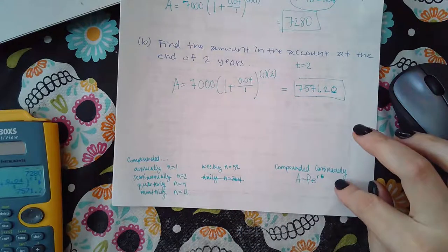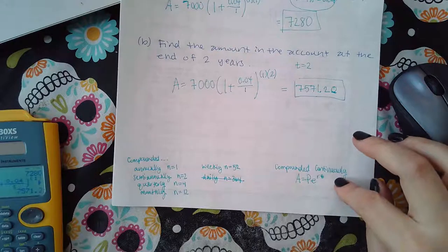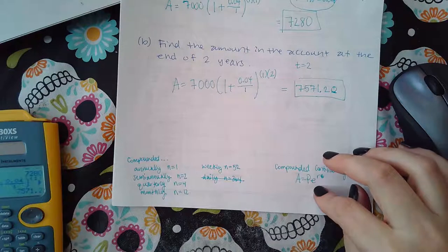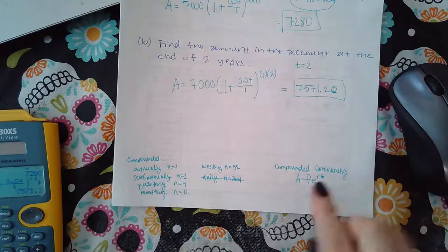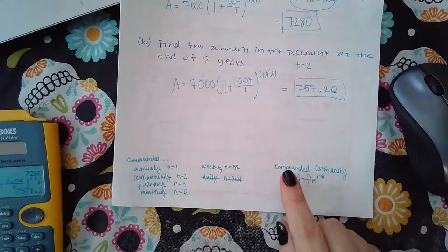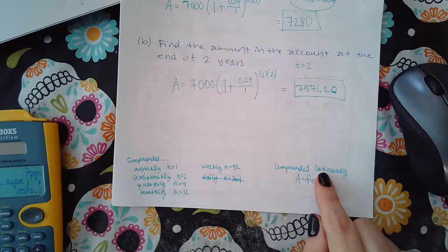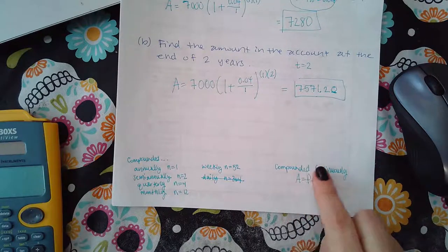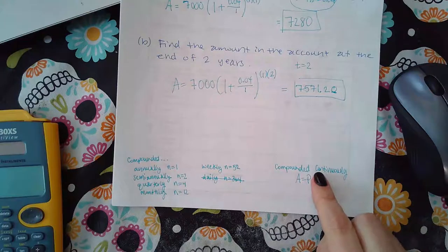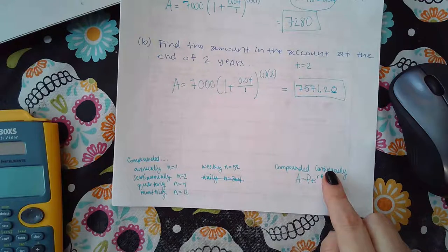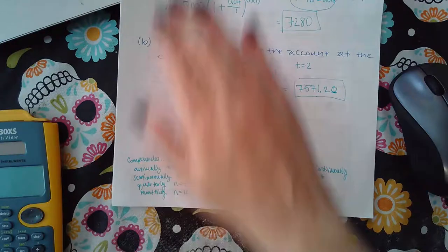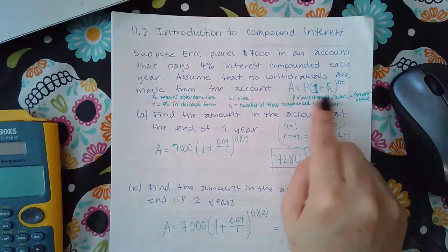There's also another one that says compounded continuously. And that one is a whole different formula than the formula that we're going to use in this topic. So if you see those words together, compounded continuously, you need to be using this formula. If you do not see these two words right next to each other, just like that, compounded continuously, then it's going to be one of these situations.